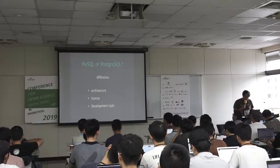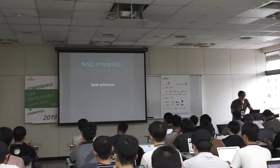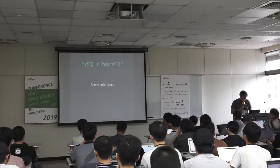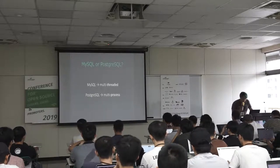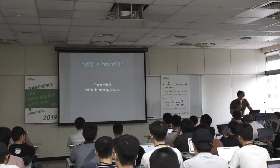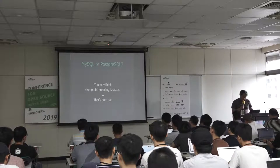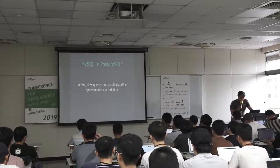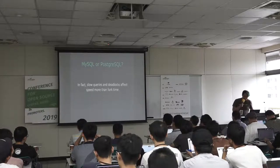Of course, there are other small differences. First is architecture — among them, the server architecture is very different. MySQL is multi-threaded. Postgres is multi-process. You may think that multi-threading is a factor, but that's not true. In fact, slow queries and deadlocks affect speed more than threading model.